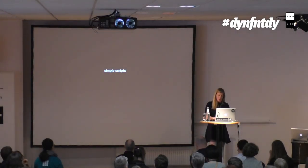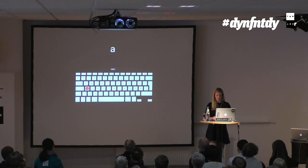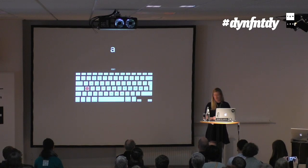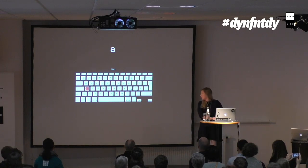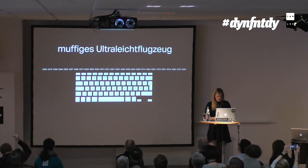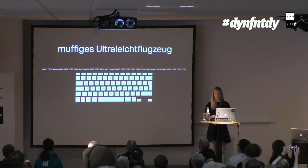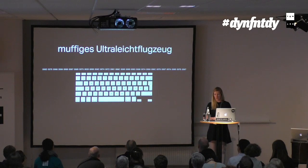To understand complex, I want to first look at simple scripts. If you have your German keyboard in front of you and you press the letter A, you will most likely get a glyph assigned to the Unicode code point 0061 — you will get an A. It's pretty straightforward. If you type the 29 letters of 'Morphiges Ultraleicht Flugzeug', you will get those as well. You type one character, you get one character.